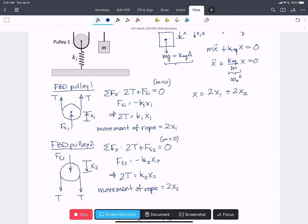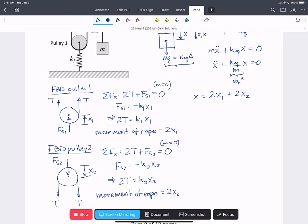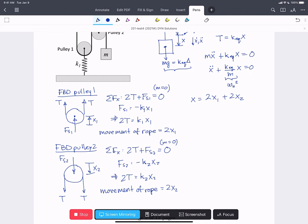What we really need to find is what this k equivalent is as a function of k one and k two. And so this relationship between the distances is going to give us that relationship between the spring constants given that we have the same tension throughout.